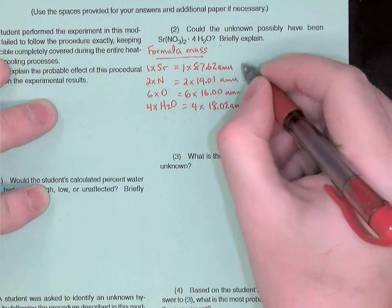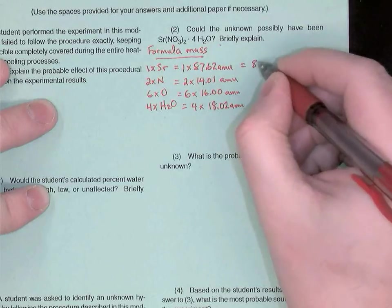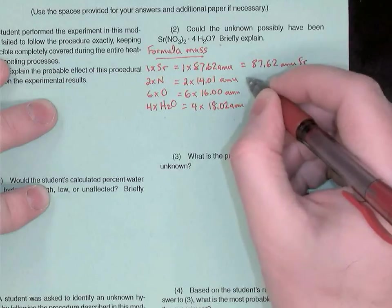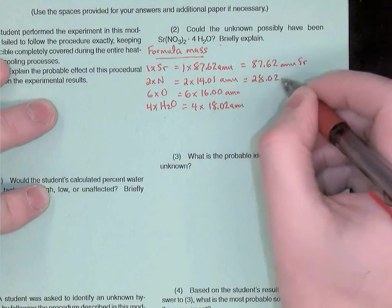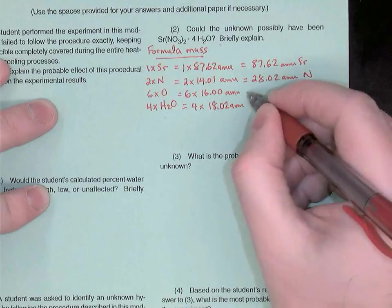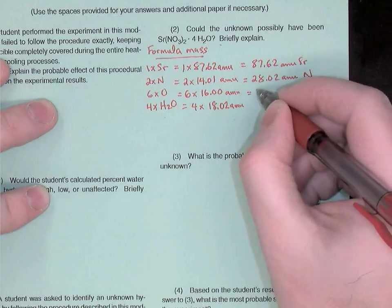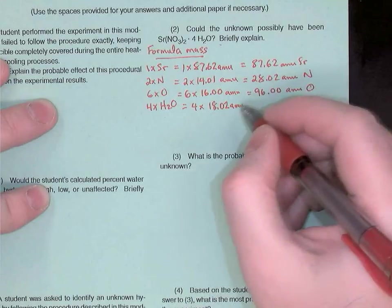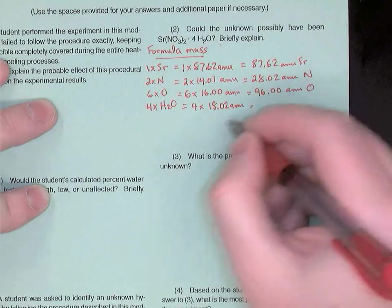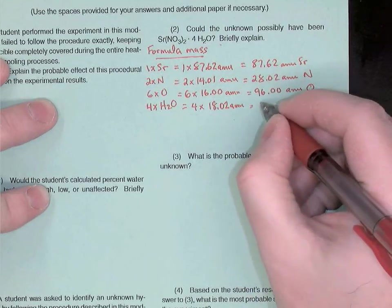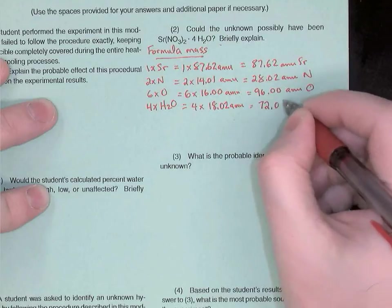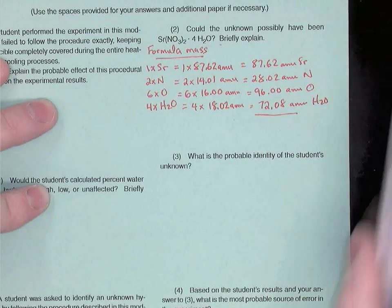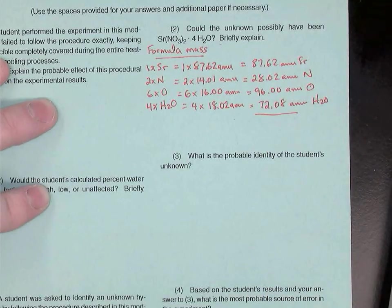So those are the masses in that formula. So that's going to give me 87.62 AMUs of strontium. It's going to give me 28.02 AMUs of nitrogen. Six times 16 is 96.00 AMUs of oxygen. And then four times 18, 40 plus another 32, so 72.08 AMUs of water attached. And now I'm going to add all that up.